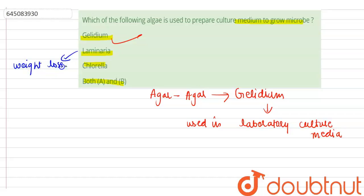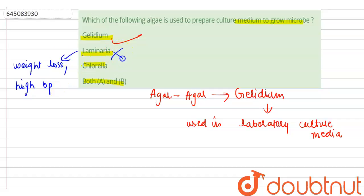Laminaria is also used as a bulk laxative for constipation, so it has medicinal uses and is therefore an incorrect option. Chlorella is also a medicine — it is used for preventing cancer and reducing radiation treatment side effects.